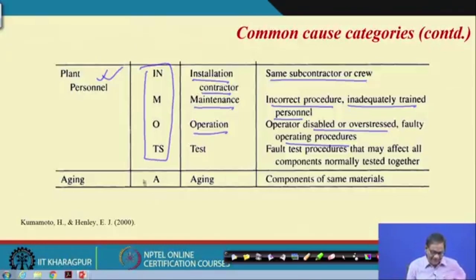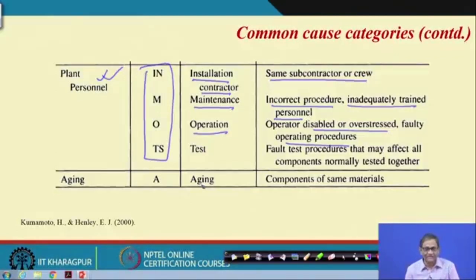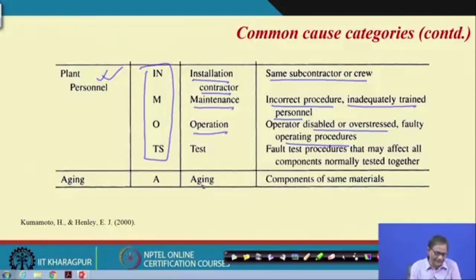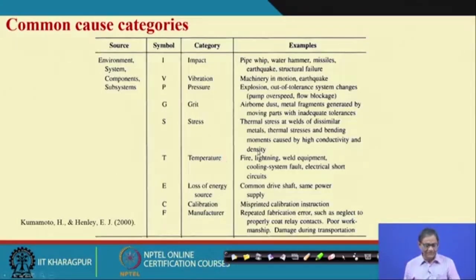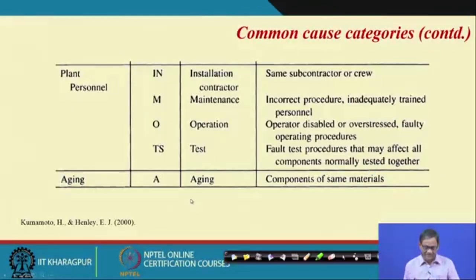The third source is ageing. Components made of the same material are identical parts with similar lifespans. It is quite likely that at a certain period of time all of them will fail simultaneously. That also leads to common cause failure, and is known as ageing.